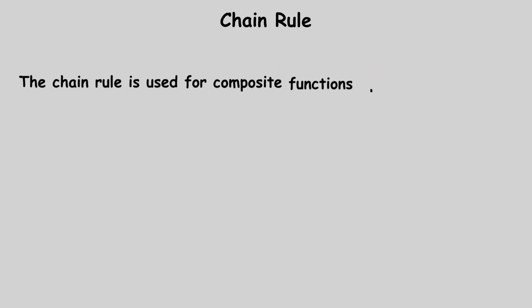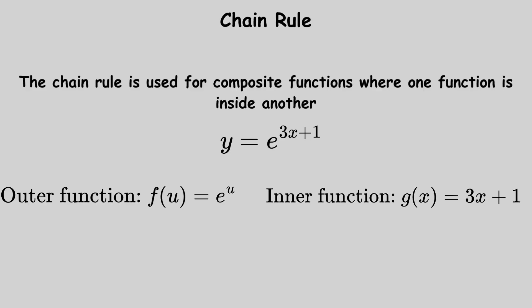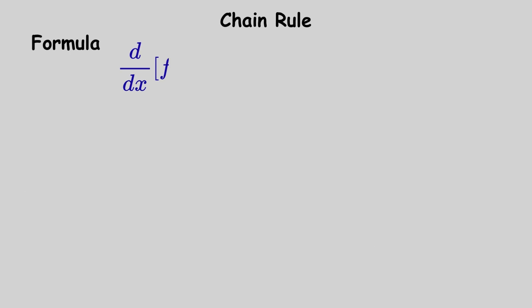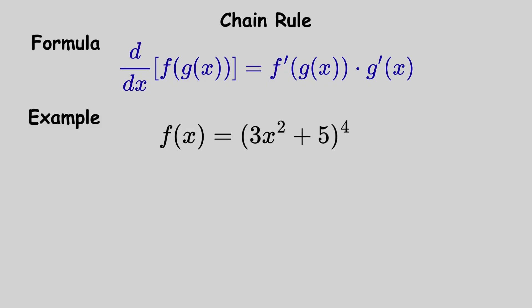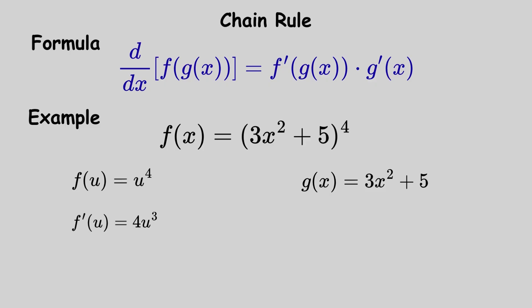The chain rule is used for composite functions where one function is inside another. First, differentiate the outer function leaving the inner function unchanged, then multiply by the derivative of the inner function. The formula is: d by dx of f of g of x equals f prime of g of x multiplied by g prime of x. For example, if f of x equals 3x squared plus 5 raised to the power of 4, the outer function is u to the power of 4 and the inner is 3x squared plus 5. Differentiating the outer gives 4u cubed; keeping the inner gives 4 multiplied by 3x squared plus 5 raised to the power of 3.